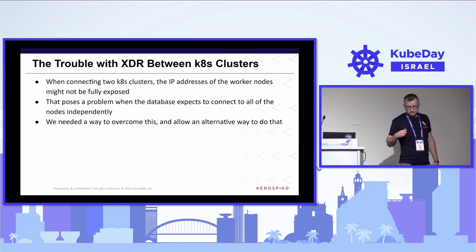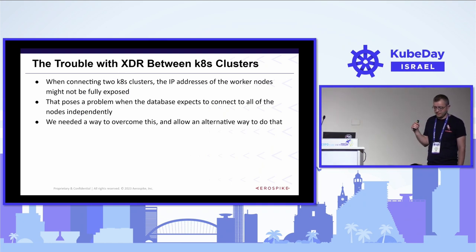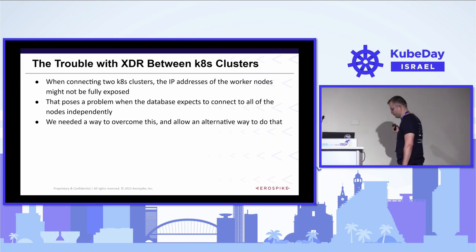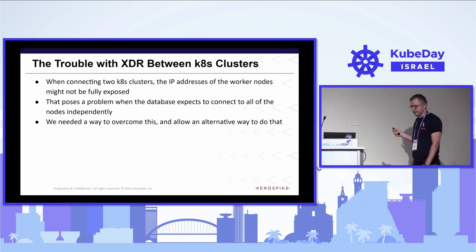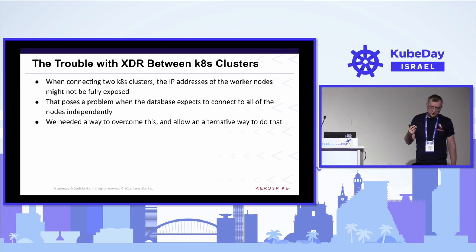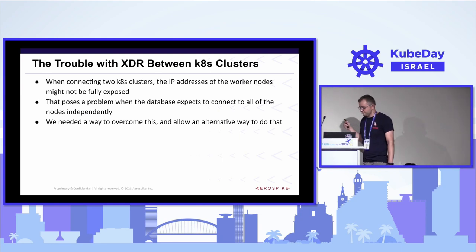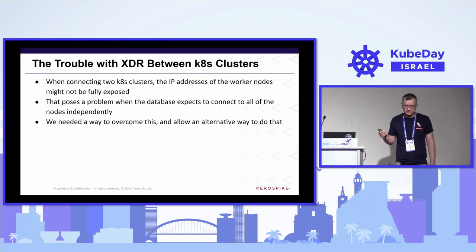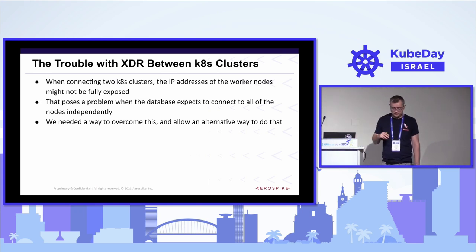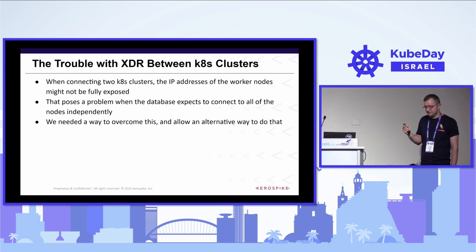The issue we faced was that we had two Kubernetes clusters running on different geographical locations or different clouds, and we wanted to make them interact with each other. We could expose a node port and define the XDR, but we wanted to stick with the standard methodologies of Kubernetes to achieve that. Also, it's not good practice to expose a large portion of your Kubernetes cluster publicly with public IPs, so we wanted to fit the standard approach that Kubernetes takes using a load balancer.